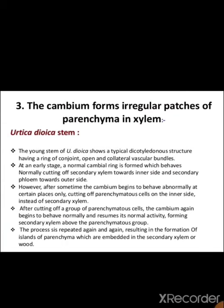The third type is where the cambium forms irregular patches of parenchyma in xylem. The example is Aristolochia. The young stem of Aristolochia shows a typical dicot structure having a ring of conjoint, open, and collateral vascular bundles. At an early stage, a normal cambium ring is formed and behaves normally, cutting secondary xylem toward the inner side and secondary phloem toward the outer side. However, after some time, the cambium begins to behave abnormally. In certain places, it cuts parenchymatous cells on the inner side instead of secondary xylem.